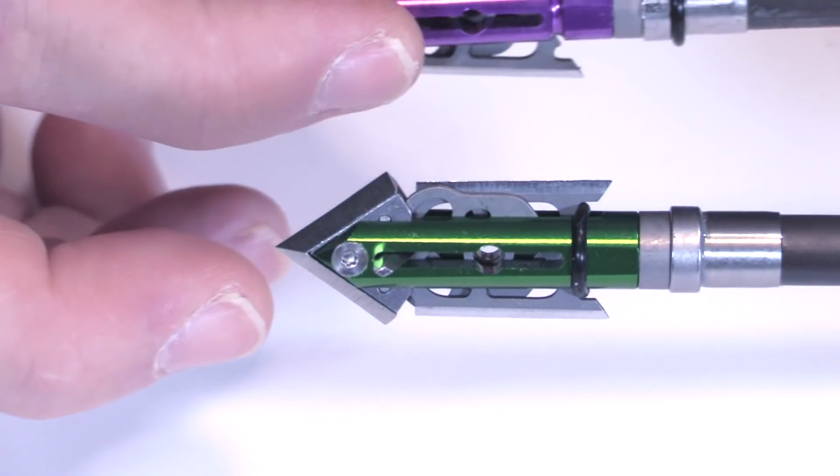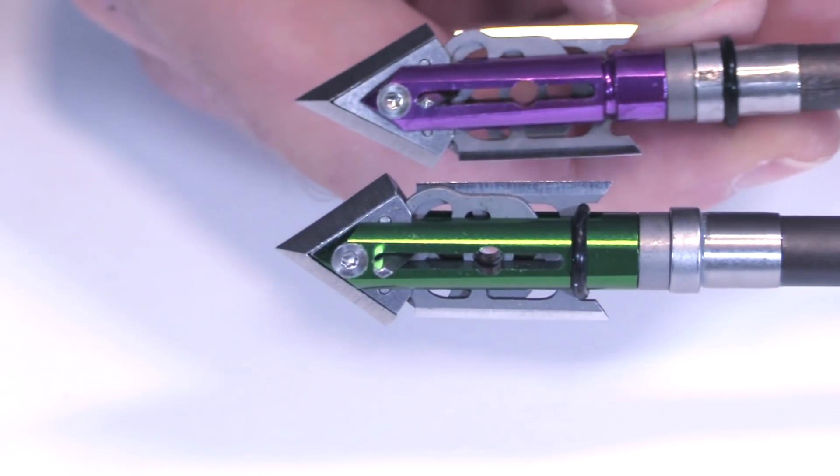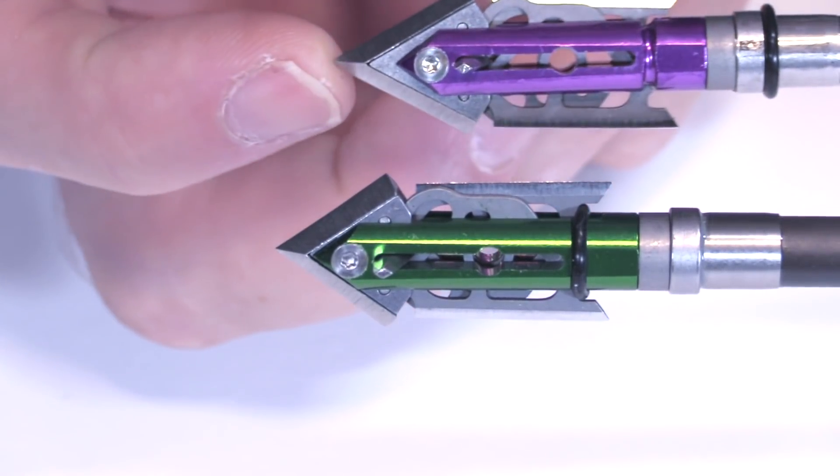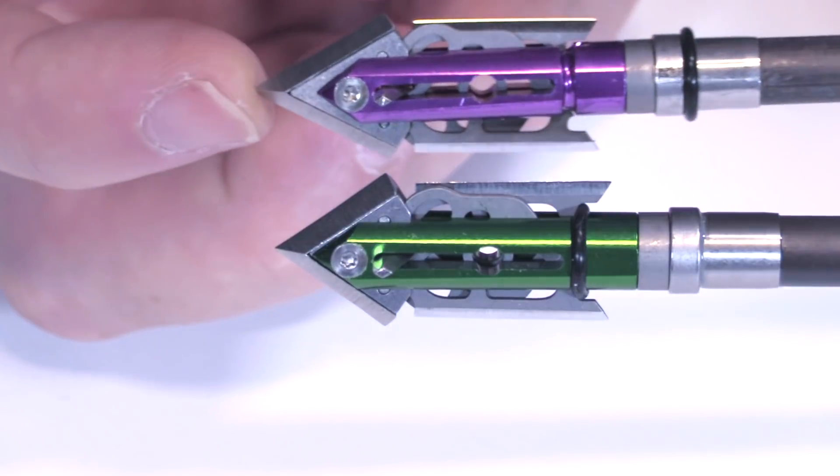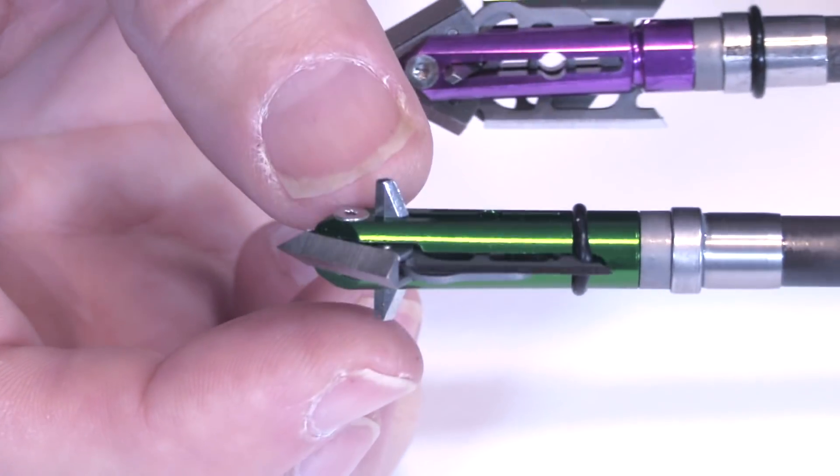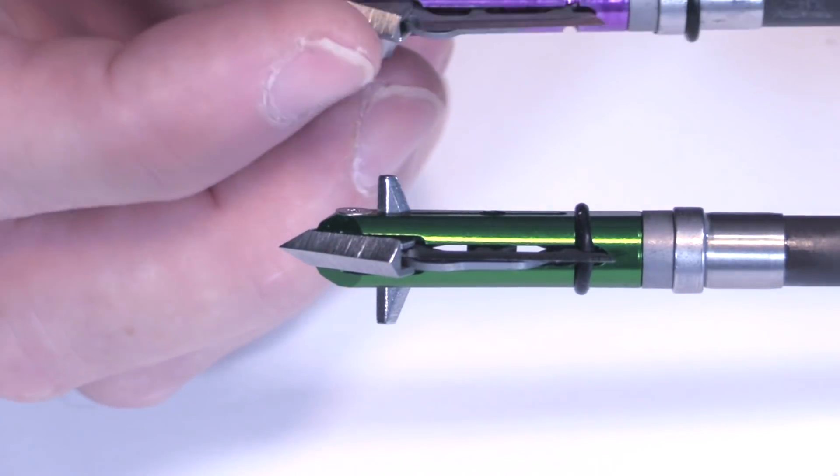So you notice that the EXT tip, let me close this so you can see the comparison. The EXT tip is just a little bit longer, it extends out a little bit longer than does the K2 tip. The K2 tip is a little bit shorter. So that's really the only difference.